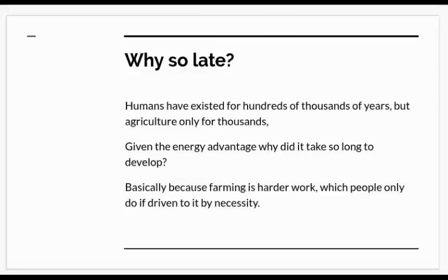But we have to ask: why is it so late? Homo sapiens has existed for hundreds of thousands of years, but agriculture has only existed for thousands of years. We've had the intellectual capability to carry out agriculture, but haven't done it. And if it has such a big energy advantage, why did it take so long for agriculture to develop? Basically, what anthropologists have concluded is that farming is actually much harder work, and people are only driven to it by necessity. The number of hours and the hardness of labour as a peasant farmer is greater than in a hunting and gathering society — they didn't have to work as hard or as long, and therefore had no incentive to become farmers.